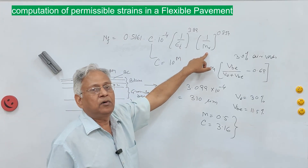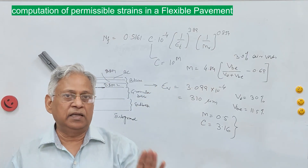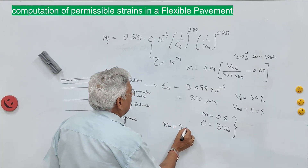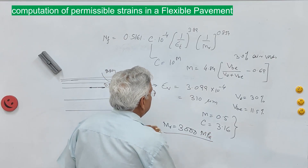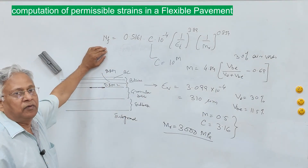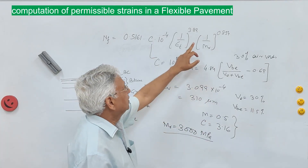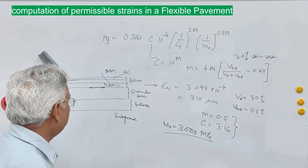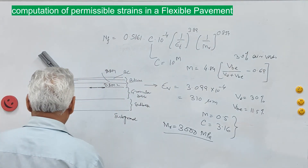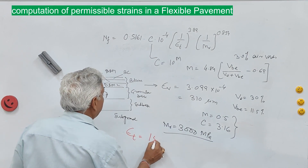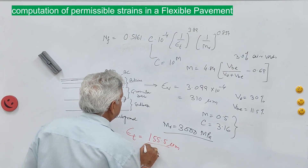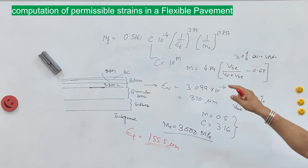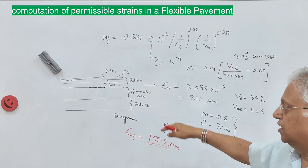M_R depends upon the type of binder to be used and a table is given in IRC 37 to select the value of M_R. For VG 40 grade binder, M_R can be taken as 3000 MPa. With N = 114 × 10^6, C = 3.16, and M_R = 3000 MPa, the permissible tensile strain at the bottom of the bituminous layer is ε_t = 155.5 microstrain. This computed value from IIT PAVE should be less than this permissible value.